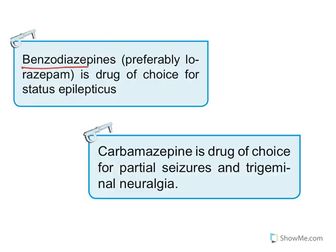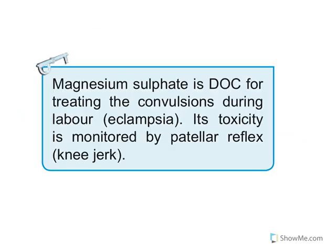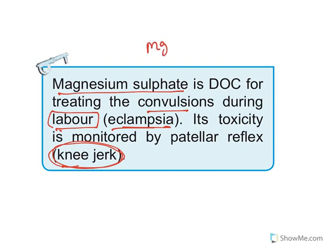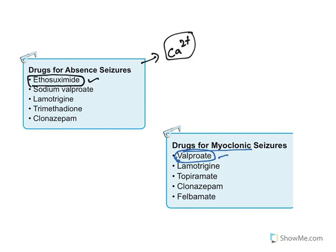Some important clinical points: benzodiazepines — lorazepam in particular — are preferred to treat status epilepticus, which is when an epileptic attack lasts more than 5 minutes. Carbamazepine is the drug of choice for partial seizures and trigeminal neuralgia. Magnesium sulphate is used to treat convulsions during labor in pregnant women; its toxicity can be monitored by knee jerk responses, and it is the drug of choice for epilepsy in pregnant women. For absence seizures, ethosuximide is preferred — absence seizures are caused by calcium entry, usually occur in children, and ethosuximide is a calcium channel blocker. For myoclonic seizures, the drug of choice is valproate.